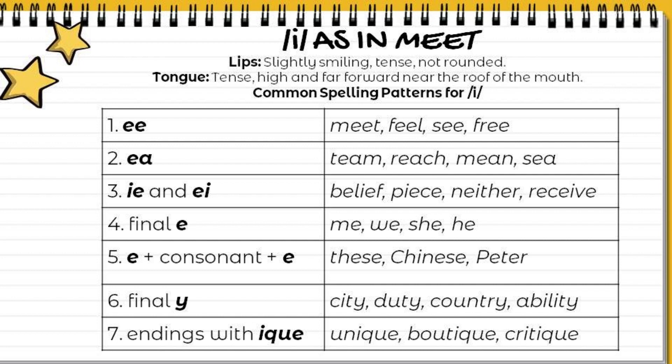An E plus a consonant plus an E as in these, Chinese, Peter. Final Y as in city, duty, country, ability. And endings with IQUE as in unique, boutique, critique.